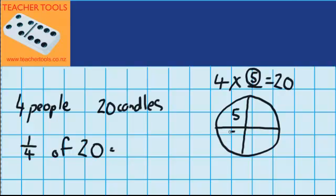So I put 5 on here, 5 here, 5 here, and 5 here, and add them all up. 5, 10, 15, 20. You can see that I've used up all the candles, and I've got an even amount in each of these quarters. So the answer to 1 quarter of 20 is 5. Each person will get 5 candles.